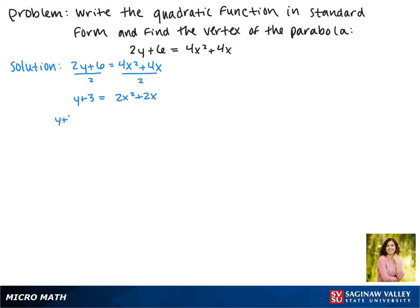Now we want to complete the square, so we'll leave a space on the left, and on the right we can't complete the square unless x squared has a coefficient of 1. So we're going to factor out that 2.